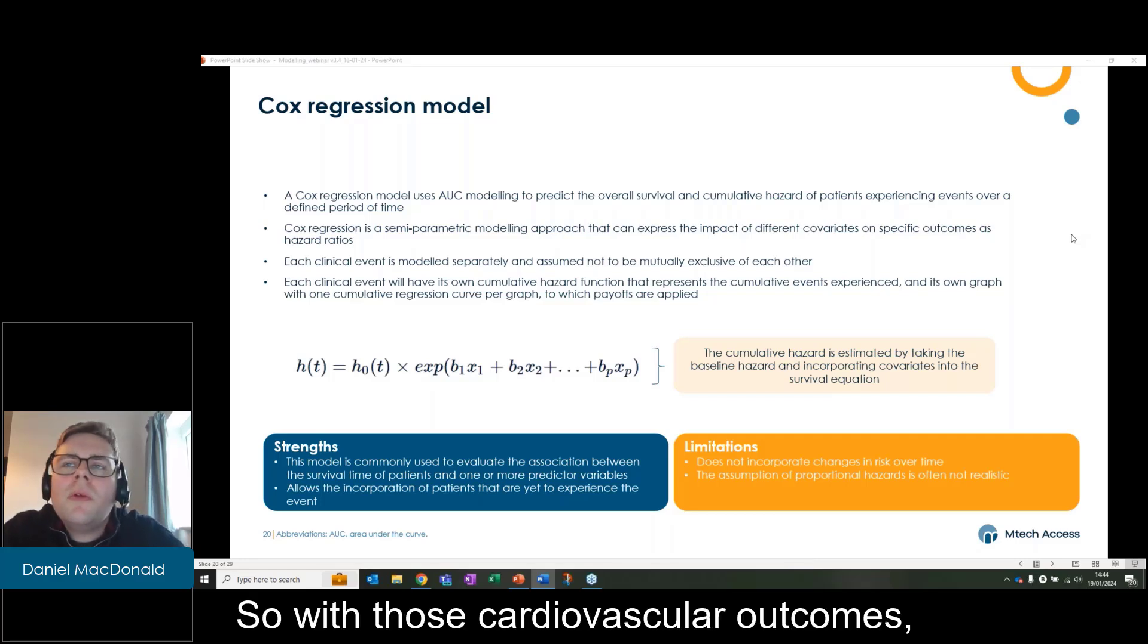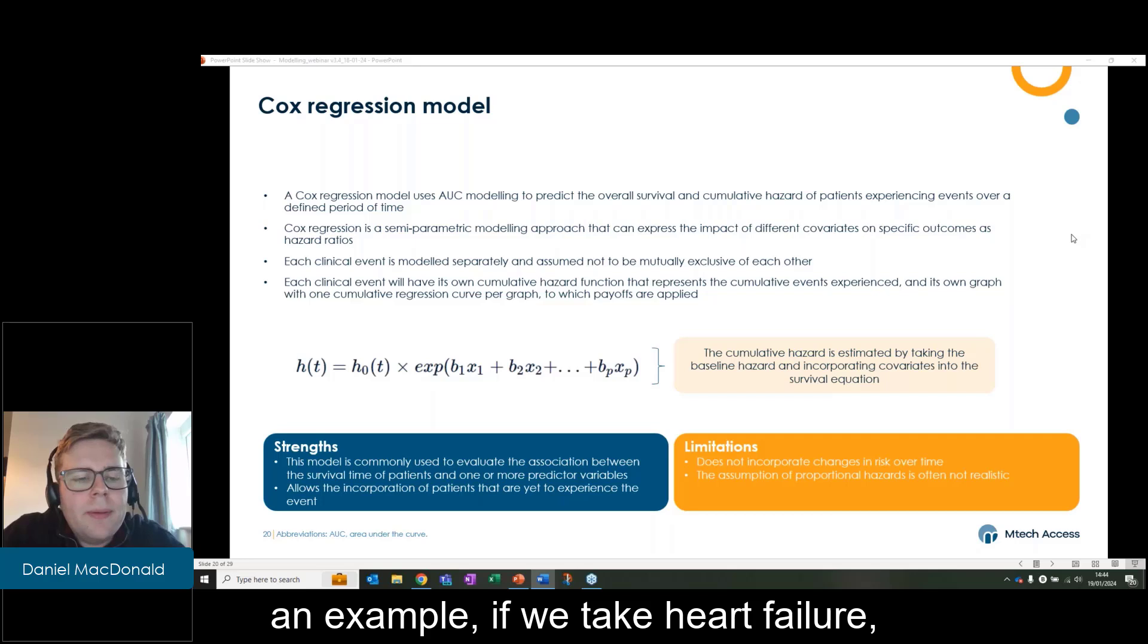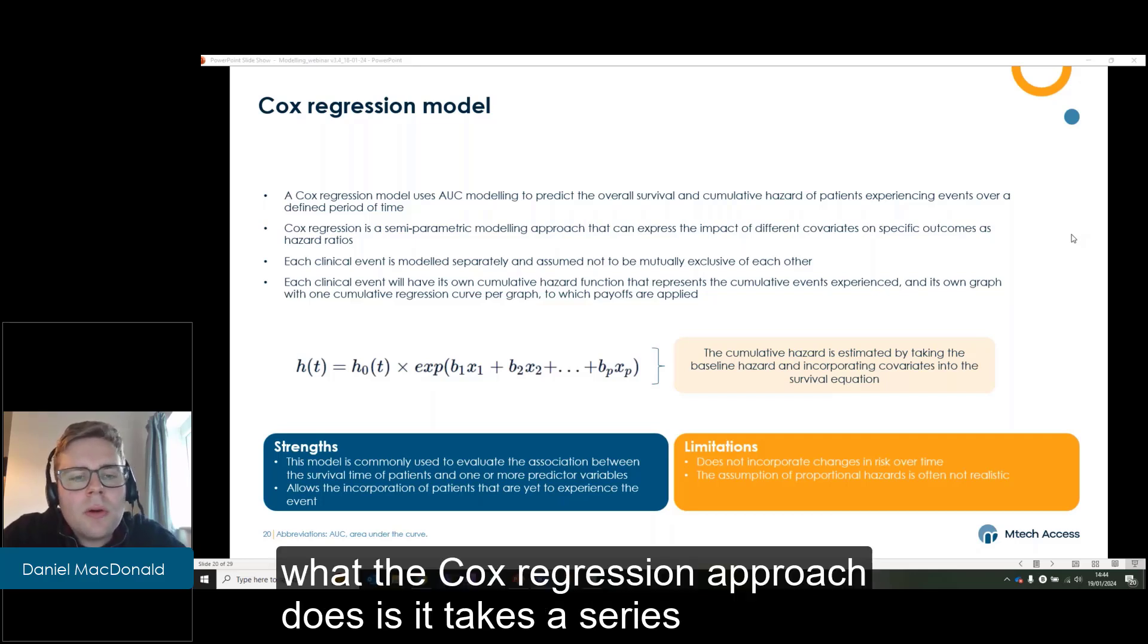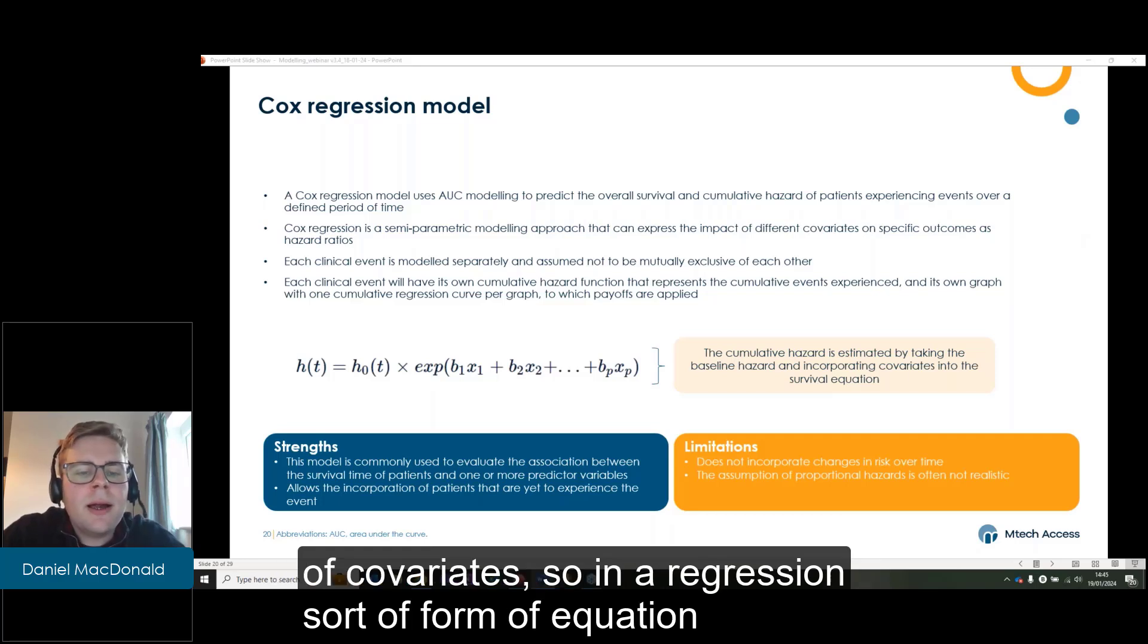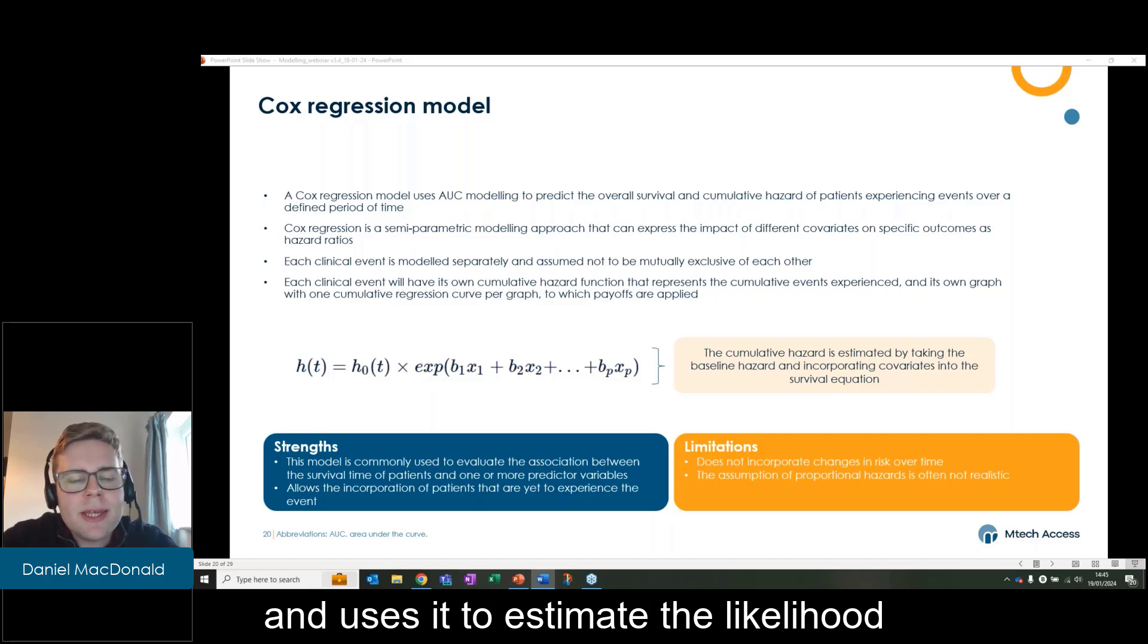So with those cardiovascular outcomes, an example, if we take heart failure, what the Cox regression approach does is it takes a series of covariates in a regression form of equation and uses it to estimate the likelihood of a heart failure event occurring.